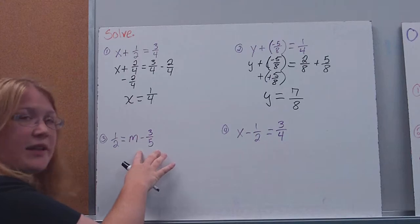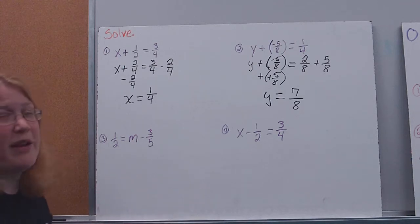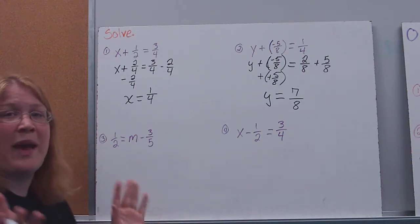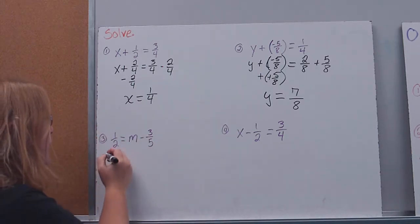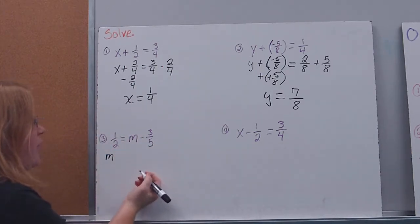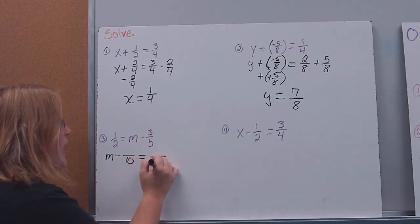All right. Over here, you'll notice my variable's on the other side. Some kids, that really bothers. Don't let it get to you. It's okay. If you don't like your variable on that side, rewrite it so that it's on the other side. It doesn't matter. They're equal, so you can flip the side that they're on. I'm going to take everything on one side and flip it over.